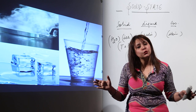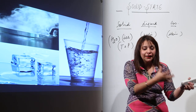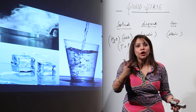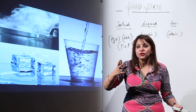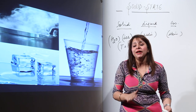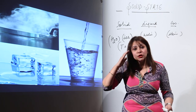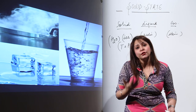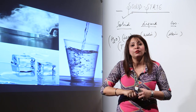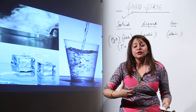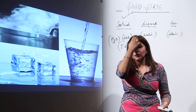Most things around us are solids. In a classroom you see chairs, tables, chalk; in your living room you see sofas, showpieces, mirrors — all solids. We have three states of matter, but the most common state in which substances exist around us is the solid state. That is why we start with this chapter on solid state — to understand the properties and behavior of solids.